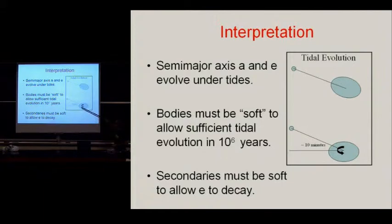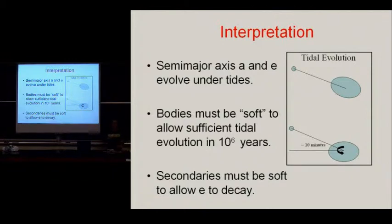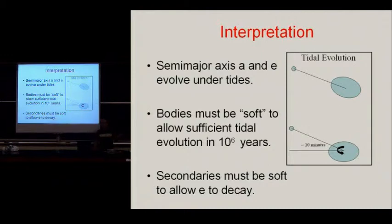For solid bodies — solid ices and solid rocks — we know from laboratory experiments and from evolution of bodies in the solar system that the dissipation of strain energy per cycle is about 1%. We say the tidal Q is about 100, so this is a very small angle — about half a degree or so.